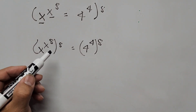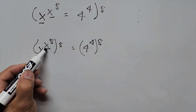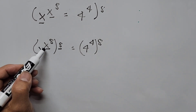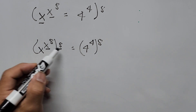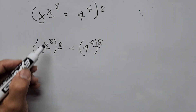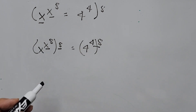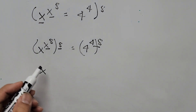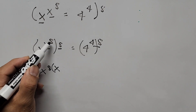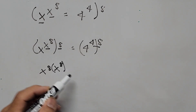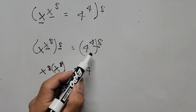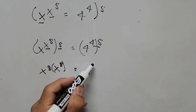Take a look at the left-hand side: x to the power of 8 and 8 are at the same level as exponents, so we can multiply these exponents together. Likewise on the right-hand side. The equation now becomes x to the power of 8 times x to the power of 8, and the right-hand side becomes 4 to the power of 8 times 4, which is 32.